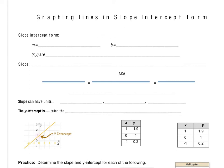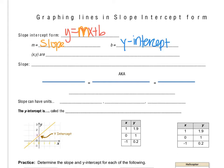Last time we learned how to find the intercepts of a graph. This time we're going to learn how to graph a line in what we call slope-intercept form. Slope-intercept form is y equals mx plus b. We call it that because it has two pieces: a slope, which is our m, and a y-intercept, which is our b value.